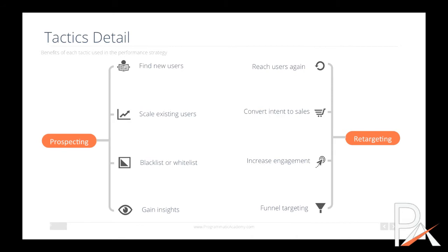Looking at the benefits of each: on the left we have prospecting. The main benefit is finding new users. We can also use prospecting to scale existing users by creating lookalike segments. We can blacklist or whitelist — a whitelist is a list of sites we want to target, a blacklist is a list of sites we want to block. Prospecting gives us insights by going across a range of pages to see who's responding to our ads.